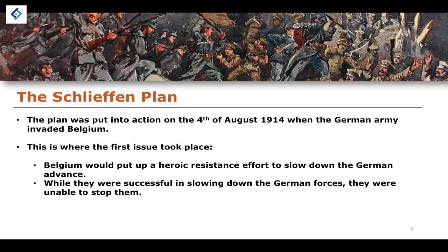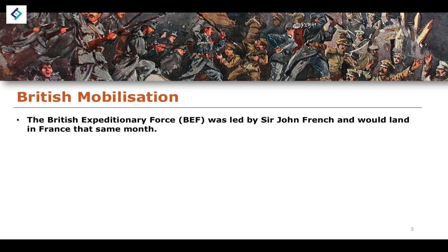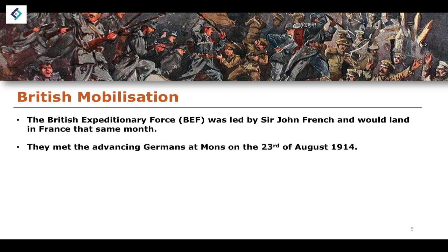The slowing of the German advance gave both France and Britain valuable time to mobilise, making the Schlieffen Plan even harder to implement by creating a more formidable force on the Western Front. British mobilisation came through the British Expeditionary Force, the BEF, led by Sir John French, which landed in France that same month. They would meet the advancing Germans at Mons on the 23rd of August 1914.